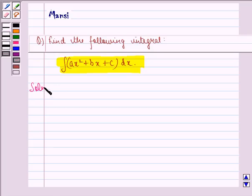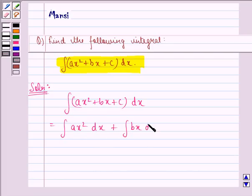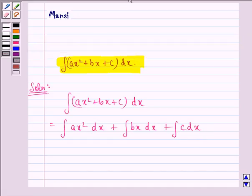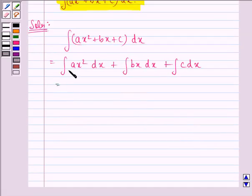Now let us start with the solution to this question. We can write ∫(ax² + bx + c)dx as ∫ax²dx + ∫bx dx + ∫c dx. Now this can be written as, since a is a constant, it comes out of the integral sign as it is: a∫x²dx + b∫x dx + c∫1 dx.